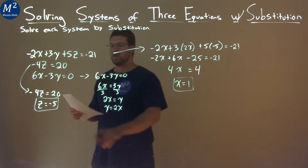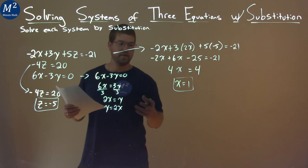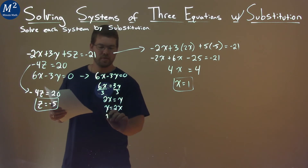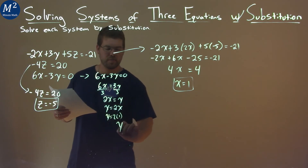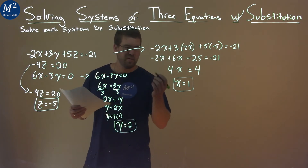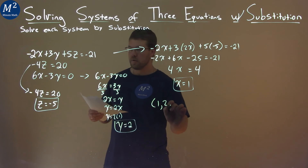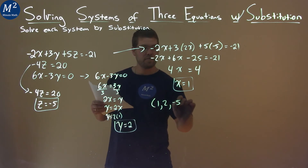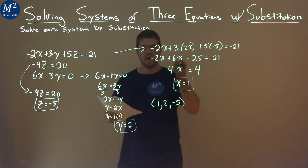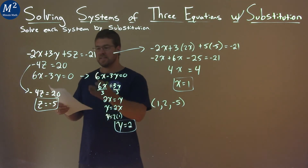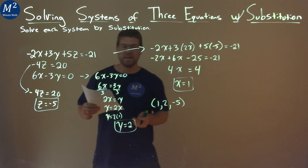So we have x equals 1, z equals negative 5, and we've got to find our y. Super easy — put 1 in for x: y equals 2 times 1, so y equals 2. We can write this as a coordinate point: 1 comma 2 comma negative 5. That's our final answer: x equals 1, y equals 2, and z equals negative 5.